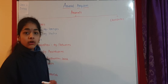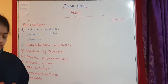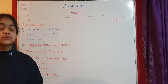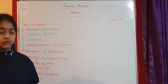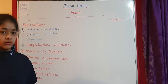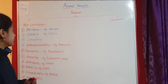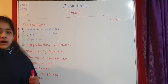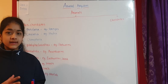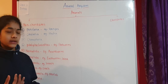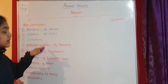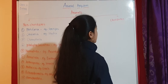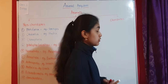So these are the non-chordates — the animals which don't have notochord and there is no notochord present during their lifetime. Notochord is a cartilaginous rod-like structure which supports the body. Now let us come to chordates. Chordates are the animals that have notochord.